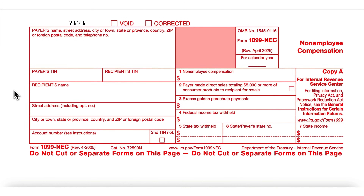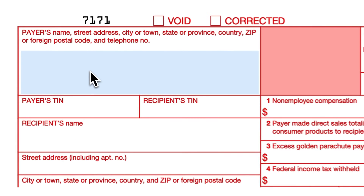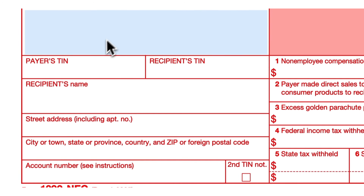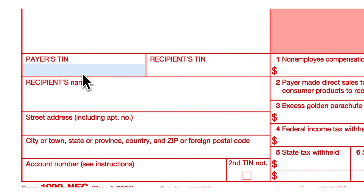Let's talk about what you need to actually file a 1099-NEC. There are four main categories of information. First, payer details — this is you or your business. You'll need your name or legal business name, address, and either your Social Security Number or Employer Identification Number. Use SSN if you are an individual or EIN if you are a business. Without it, the IRS won't know who's sending the form.